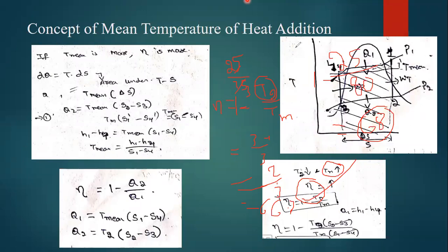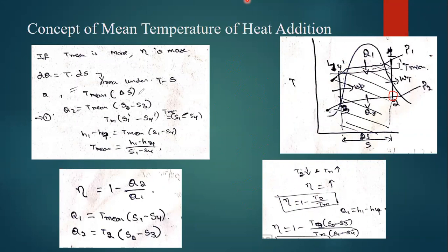Efficiency is going to be high. At the same time, if T2 is minimum - whatever the temperature T2 we have, if that is going to be minimum, then also we will get higher efficiency. By doing the same calculations you can know. In that way we can say that if the mean temperature is going to be high, then the efficiency is going to be high.